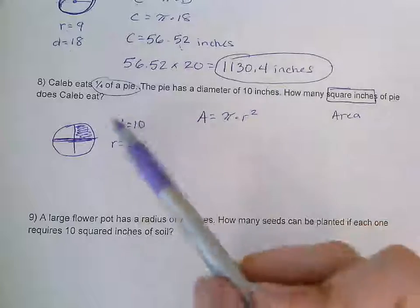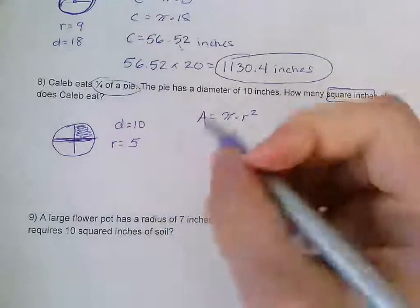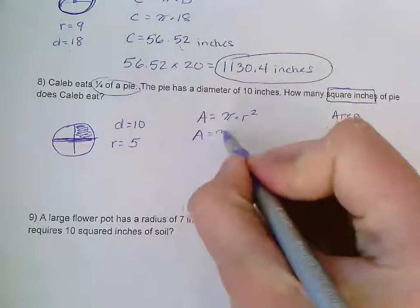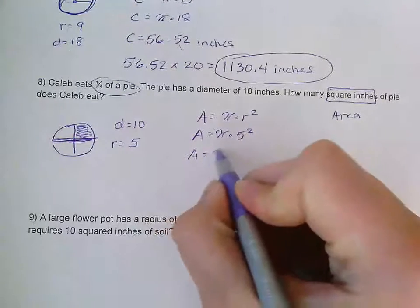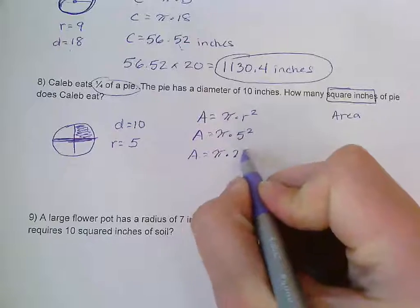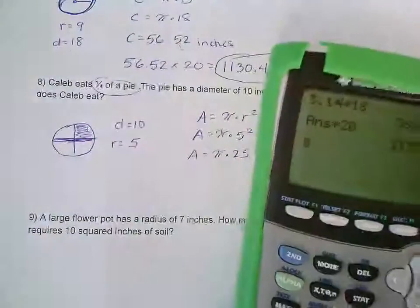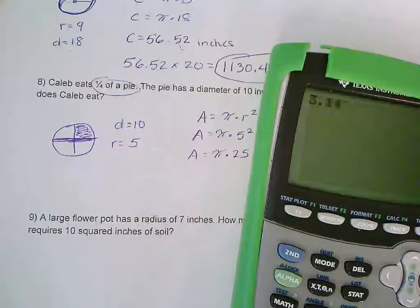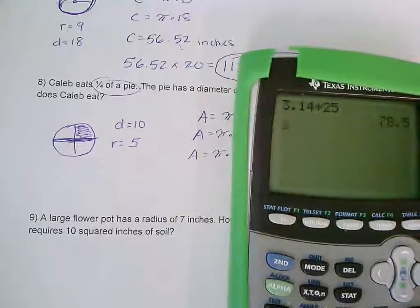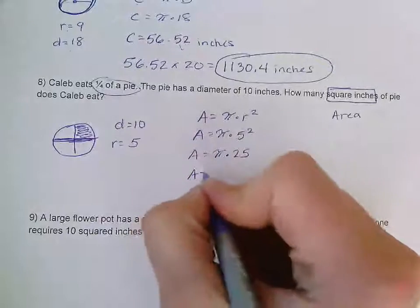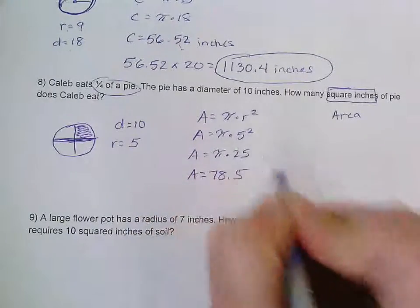So what I'm going to do now is I'm going to take this radius of five and I'm going to plug it in here for r. So area equals five squared, five squared, that's 25. And so now I'm going to use my calculator to take pi times 25, and that is 78.5. So my area of the entire thing right now is 78.5.